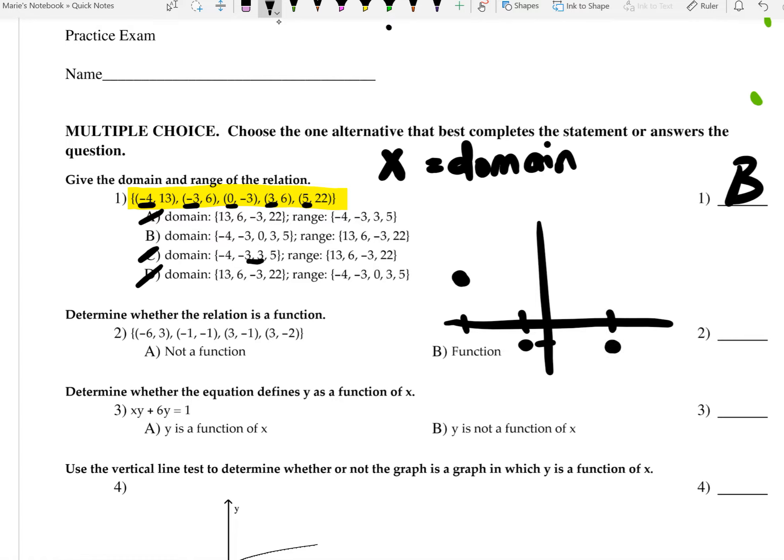And then I have 3, negative 2, and again, this one would be about here. Notice that this would fail. It would cross over, and so notice that these two points are being hit with the vertical line, so this is not a function. So your answer choice for this would be A.